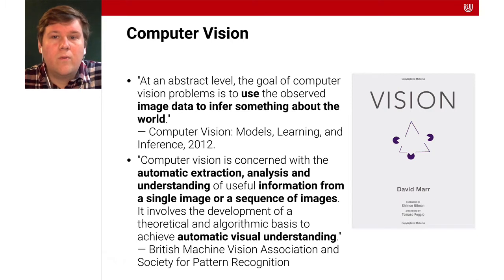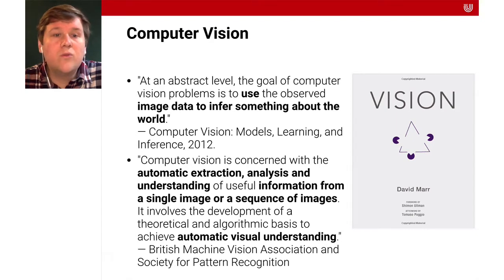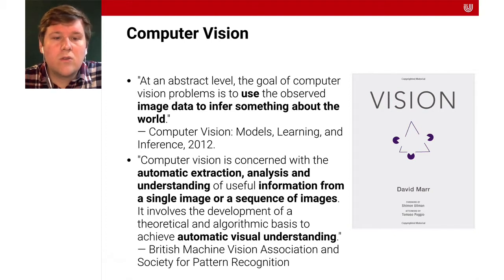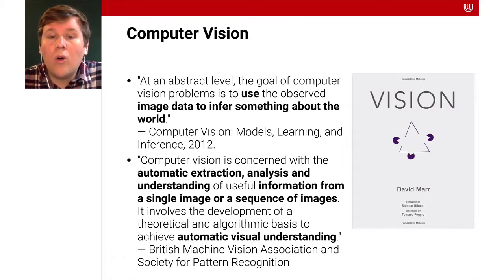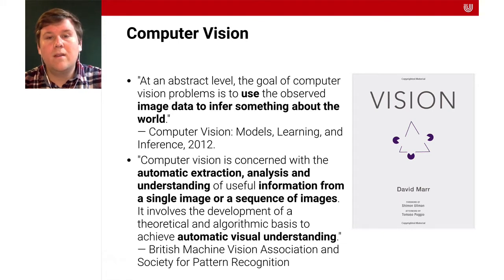Let's consider some definitions of what computer vision is. The book Computer Vision: Models, Learning and Inference describes it as follows: at an abstract level, the goal of computer vision problems is to use the observed image data to infer something about the world. Computer vision is seen as concerned with the automatic extraction, analysis, and understanding of useful information from a single image or a sequence of images — so also videos. It involves the development of a theoretical and algorithmic basis to achieve automatic visual understanding.